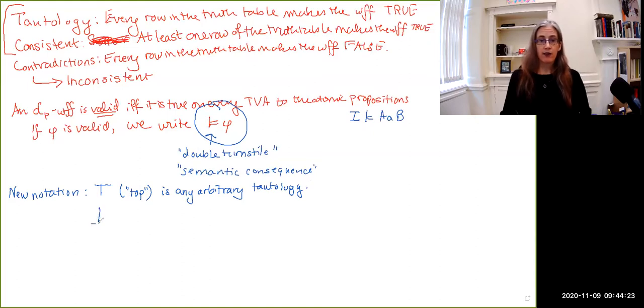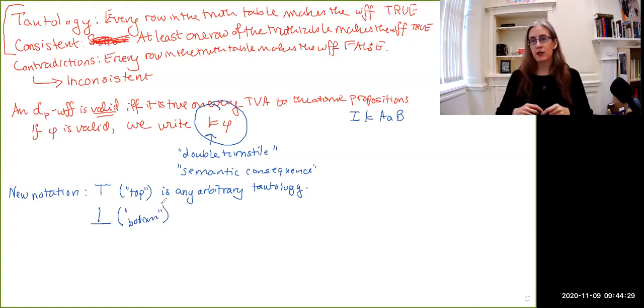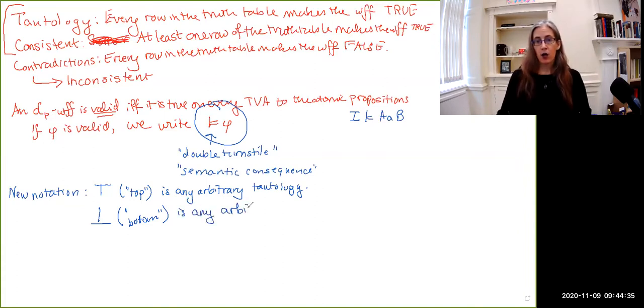Then we also have this guy, which is pronounced bottom, because you take top and you turn it upside down and you get the bottom. And this is going to be any arbitrary contradiction. So it could be not P implies P, it could be P and not P, or it could be something more complex.